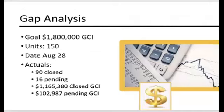You can see the example that I've got. I'm using the goal of 1.8 million in gross commission income and 150 units. That was the goal in this example for 2020.